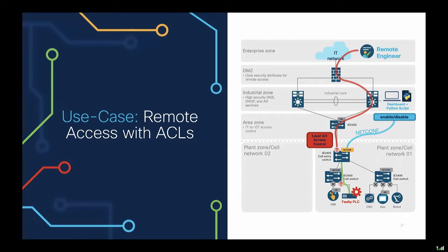In this scenario, you have a remote engineer who needs to access a faulty PLC. You don't want direct access, but with some configuration in the DMZ and firewall, you can leverage a classic enable and disable of layer 2 or layer 3 access controls. With NETCONF, the remote worker — together with a dashboard or Python script — can simply enable the NETCONF configuration to grant access to the IOS switch.